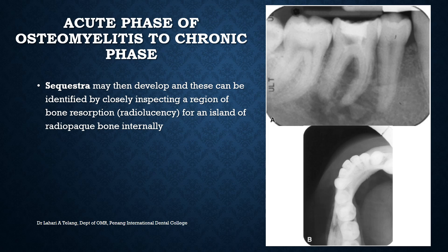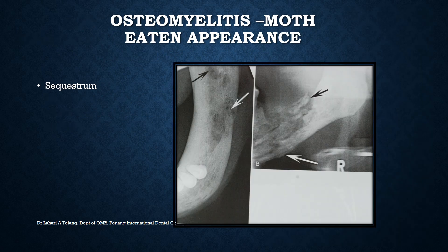You can also see the enlargement of bone at the periphery on this occlusal view. The typical appearance of osteomyelitis is called a moth-eaten appearance. The black and white arrow marks point towards involucrum and sequestra, giving it the classic moth-eaten appearance.